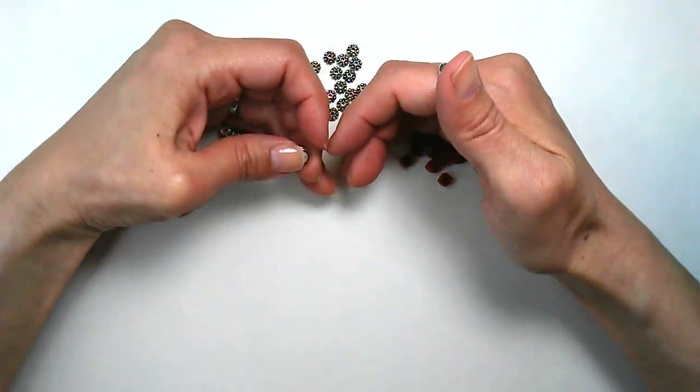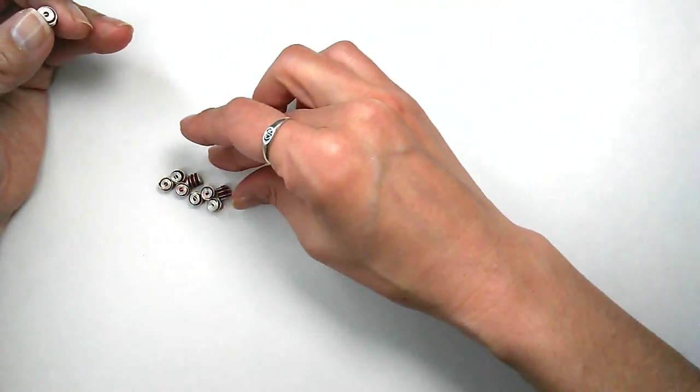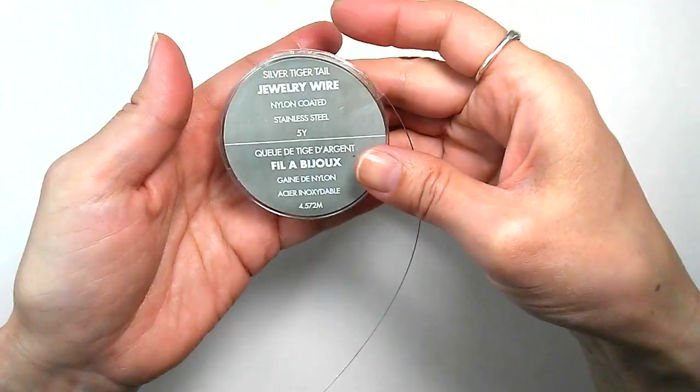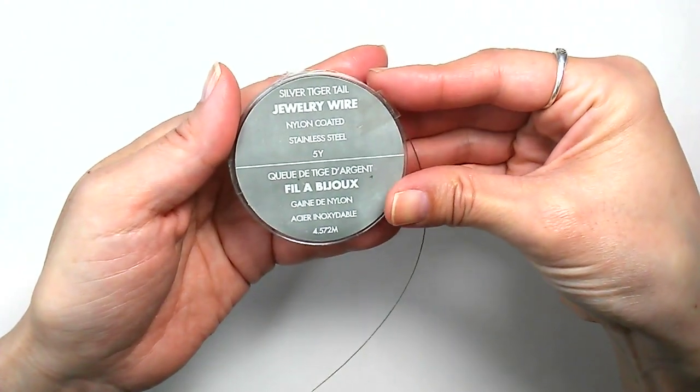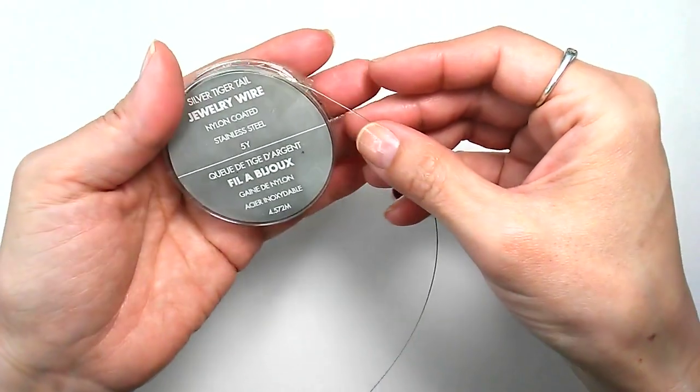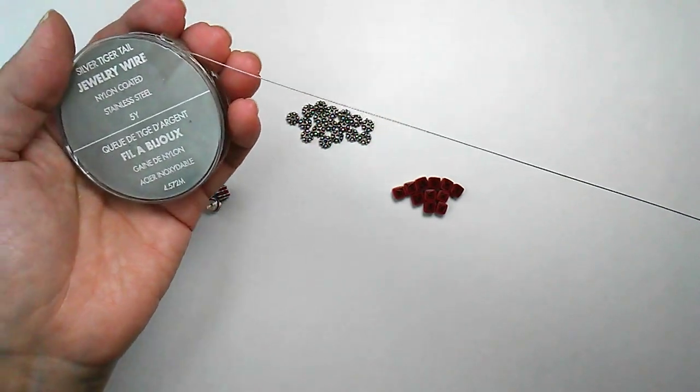Okay, we've got our wire wrapped beads, spacer beads, and square beads. Silver tiger tail jewelry wire, nylon coated. This is what I'll thread the beads onto. It's neat stuff.